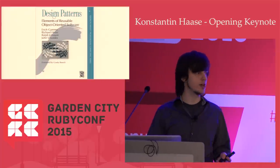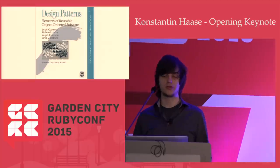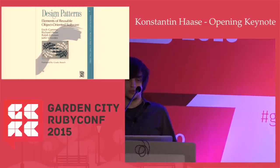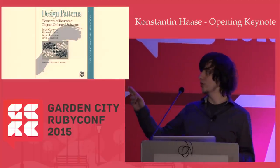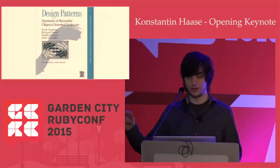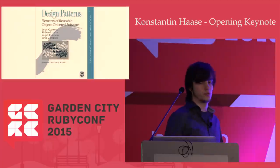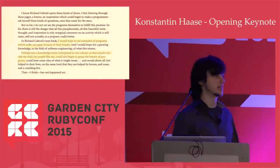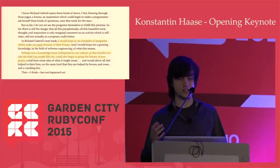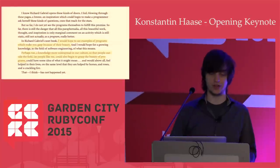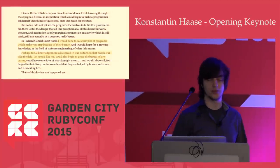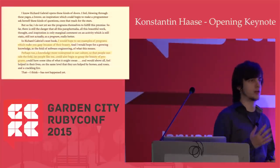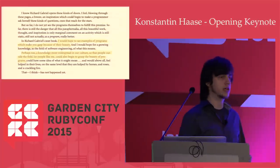A lot of things we use today to communicate about software comes from this book. There's also a nice quote by Christopher Alexander, the architect, who wrote the foreword for Richard Gabriel's book Patterns of Software, which came out two years later. In that book he says, 'I would hope to see examples of programs which make you gasp because of their beauty. Perhaps, too, a knowledge more widespread in our culture so that people outside the field — lay people like me — could also begin to grasp the beauty of programs.' And I think for that we need abstract concepts like those patterns to reason about software, to reason about what is beautiful software.